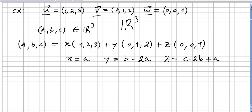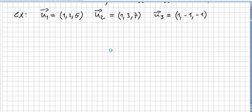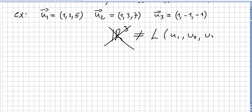Now it's easy to check that vectors u1 = (1, 2, 5), u2 = (1, 3, 7), and u3 = (1, −1, −1) do not span R³. You can do the calculations and you will see that these three vectors do not span R³, so R³ is not in the linear span of u1, u2, u3.